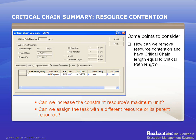At this point, you'll need to ask yourself these two questions: Can we increase the constrained resource's maximum units? Can we assign the task with a different resource or its parent resource? Assuming that you can increase the software engineer's maximum units from 1 to 2 on the Concerto resource sheet and rerun Identify Critical Chain, you might get the critical chain duration to match the critical path duration. Sometimes, however, it's not possible to increase a resource to shorten the cycle time. You might have to live with what you have. At least, the possibility of a shorter cycle time is identified by Concerto, so you know it.